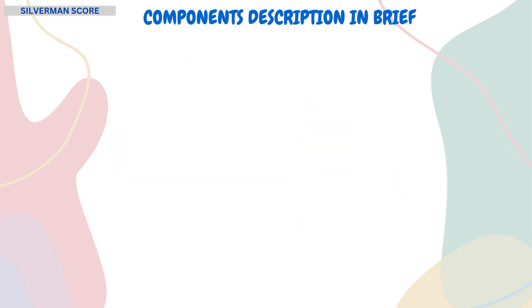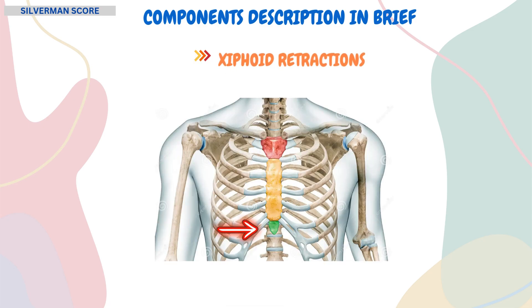Then comes the xiphoid retractions. It refers to the inward movement of the xiphoid process during inhalation. The xiphoid process is the lower part of the sternum. This happens when the diaphragm and other respiratory muscles contract to help expand the lungs.